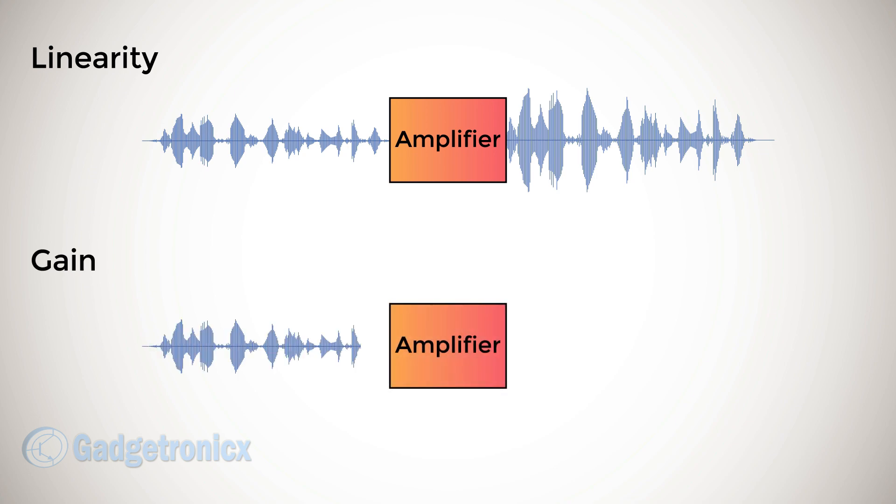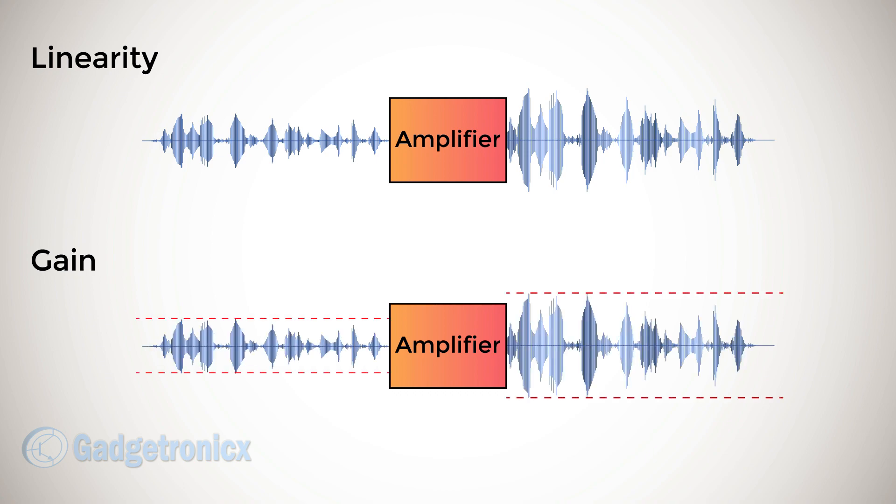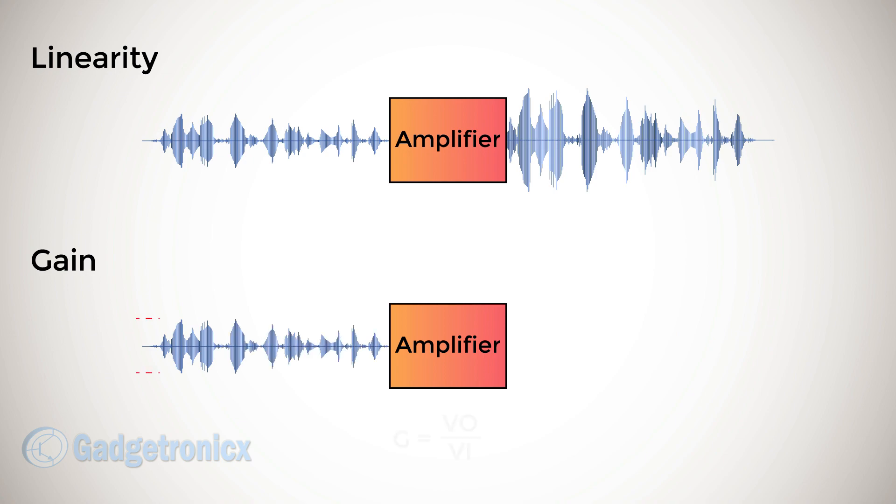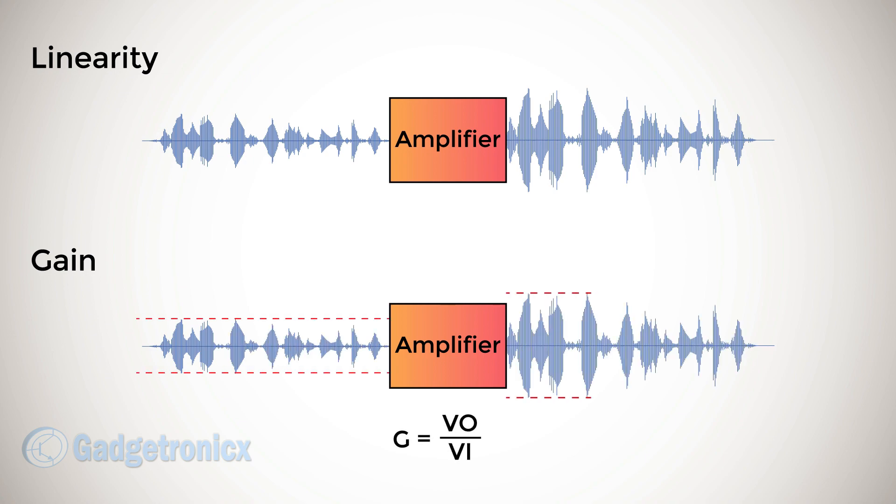Gain: The ratio between the magnitude of key parameters features of input and output signal. For example, voltage gain is given by the ratio between voltage of signal output to the voltage of input signal.